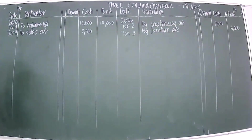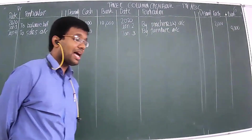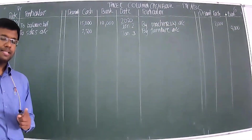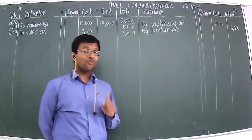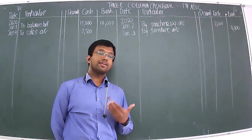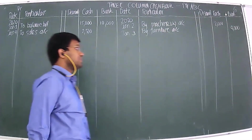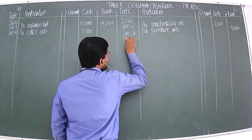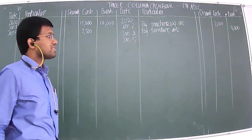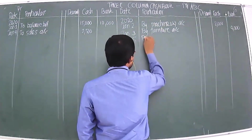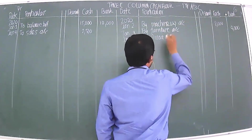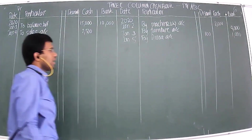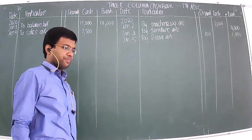January 5th: paid Diana ₹1,000 in full settlement of ₹1,100 by cheque. We were supposed to pay ₹1,100 but paid only ₹1,000, so we receive a discount of ₹100. Payment is by cheque, so it goes from the bank column. Entry: By Diana Account — discount column ₹100, bank column ₹1,000.